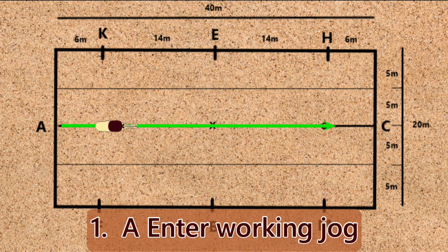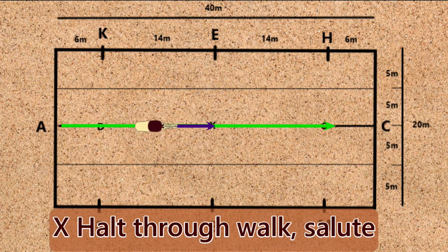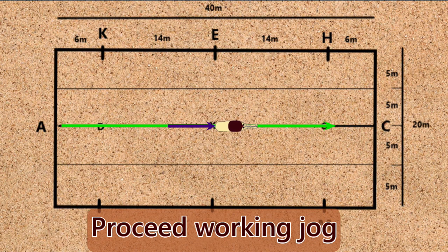Movement 1: A, enter working jog. X, halt through the walk, salute, proceed working jog.